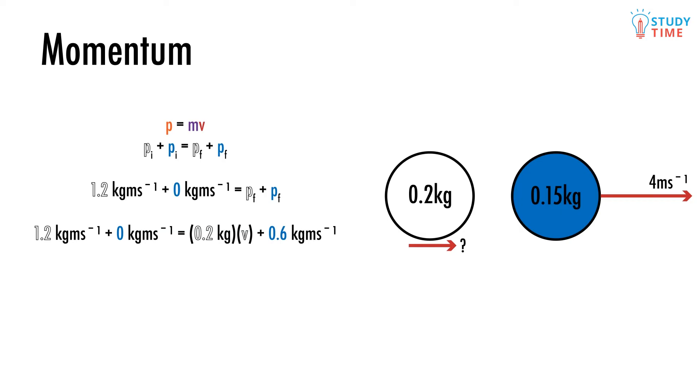So we can write that all out for the entire equation: 1.2 equals 0.6 plus 0.2 times v. This is just a simple piece of algebra. Solving for the final velocity of the white ball, we subtract 0.6 from both sides.